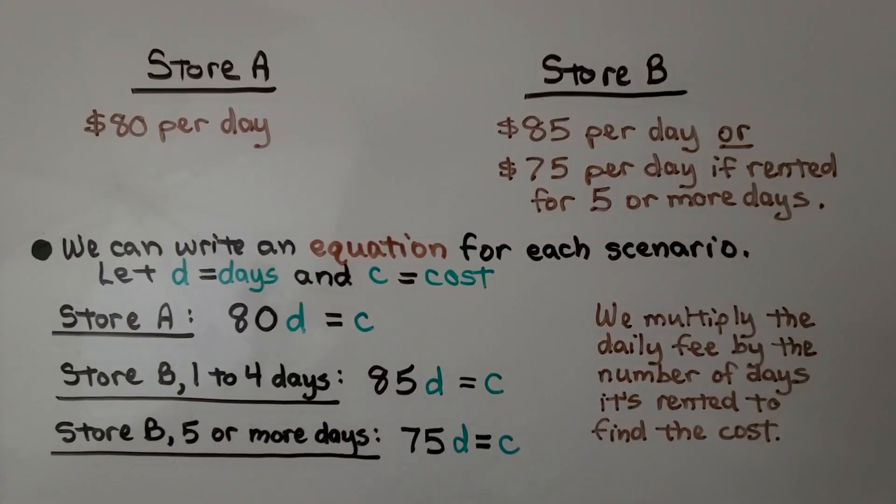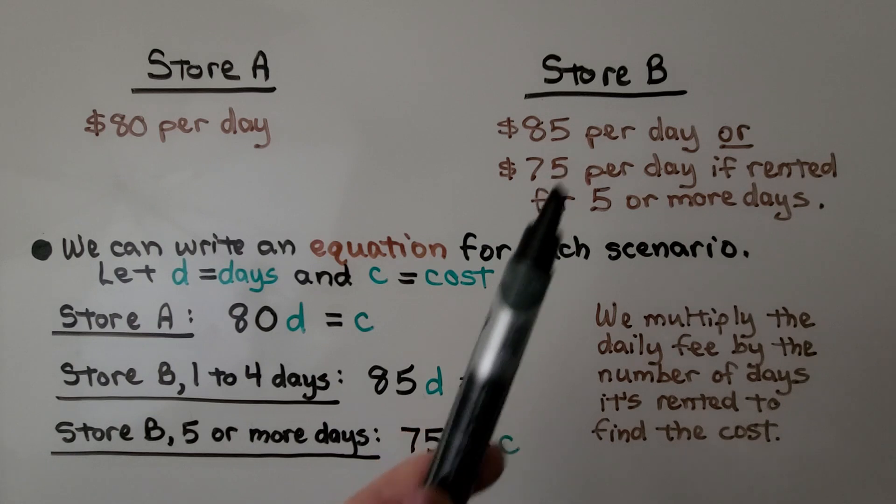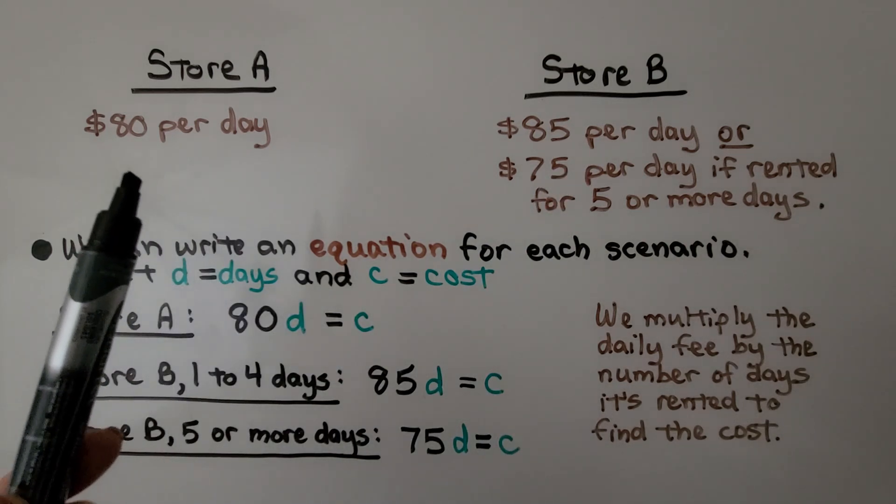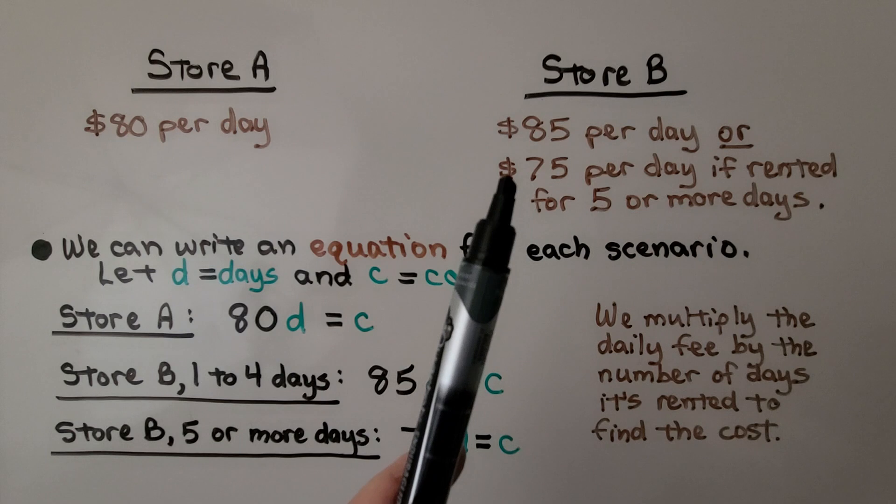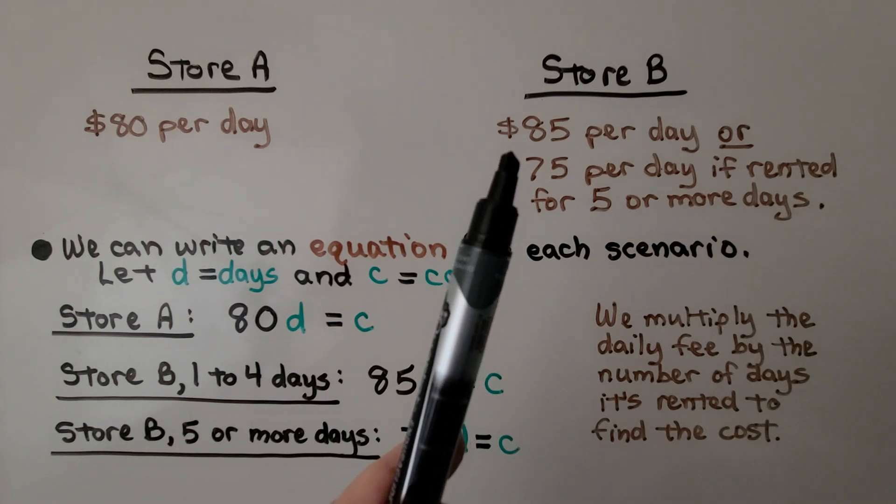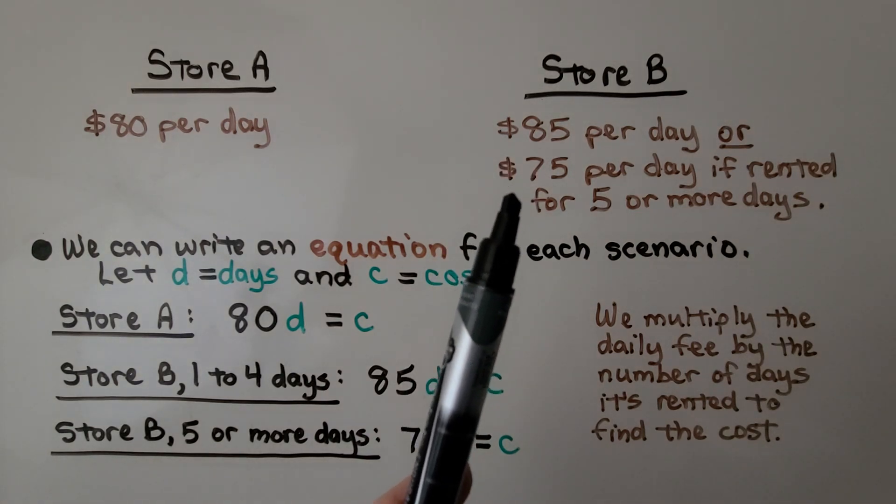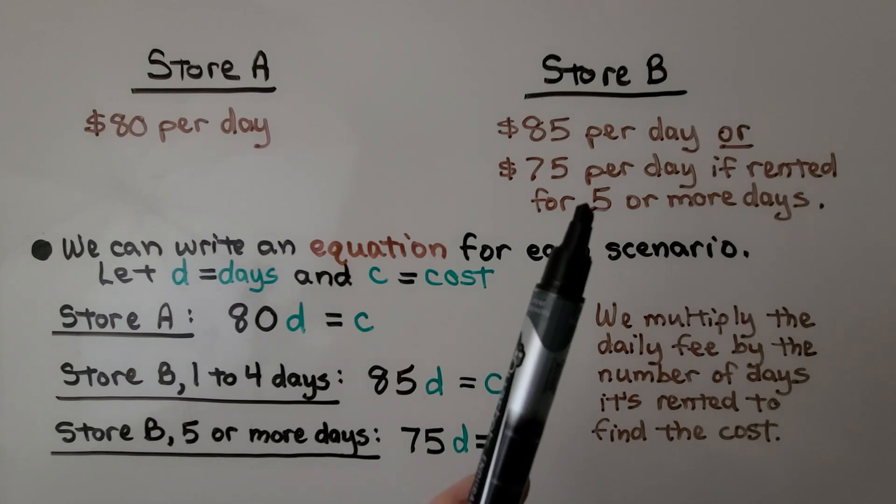So he can rent it from store A or store B. Store A charges $80 per day. Store B charges $85 per day or $75 per day if rented for five or more days.